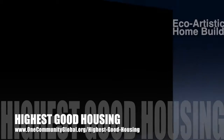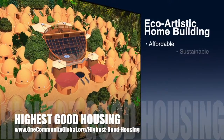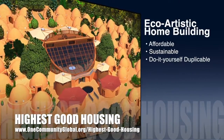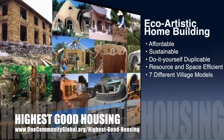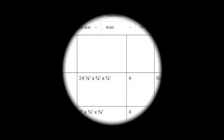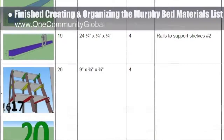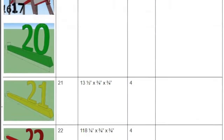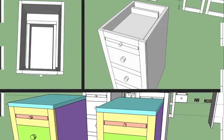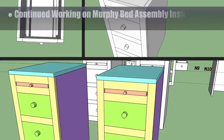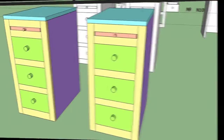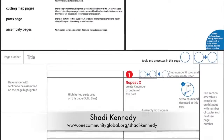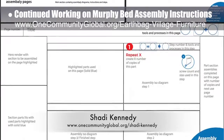One Community's approach to highest good housing is eco-artistic home building that is affordable, sustainable, do-it-yourself, duplicable, resource- and space-efficient, consisting of seven different sustainably constructed village models. This week the core team finished creating and organizing the murphy bed materials list for the backside redesign. The core team also tested and identified errors in the murphy bed nightstand assembly instructions by building them in 3D while using the new instructions. Shoddy Kennedy, artist and graphic designer, completed his tenth week leading the development of these murphy bed instructions.